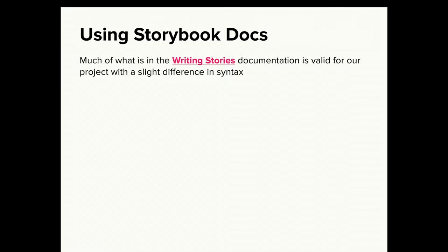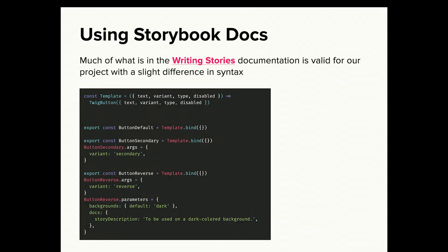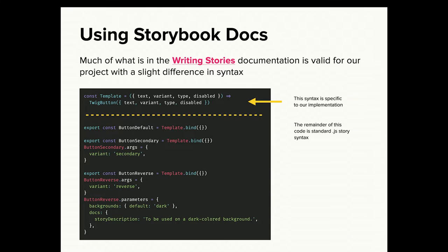The big thing you do in Storybook is write stories — it's a JavaScript file. Most of what's in the documentation is also correct for our approach. But there's one thing that's not: the first line of the story file — the syntax is specific to our implementation. In the React version, you basically render a component and pass your args in; you just have to do it slightly differently for Twig. But everything below that dotted line is all normal Storybook stuff you'll find in the documentation — none of it's changed.